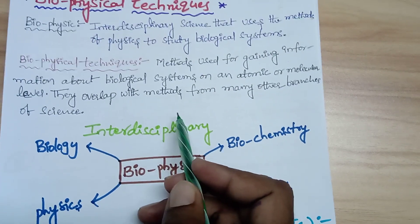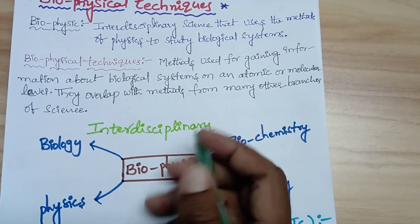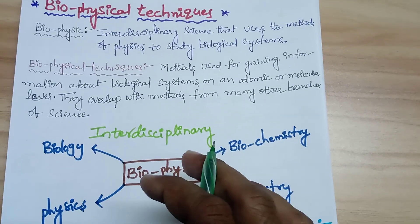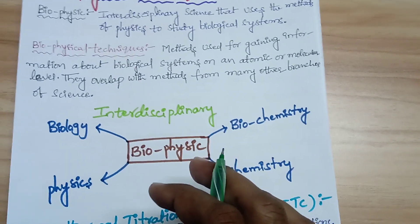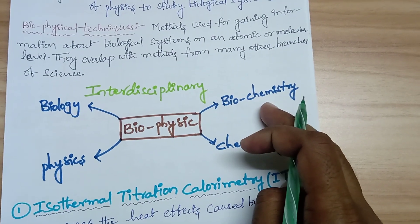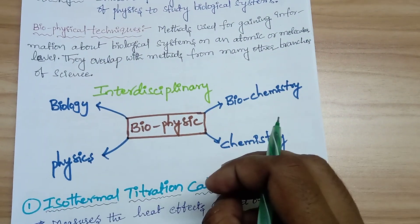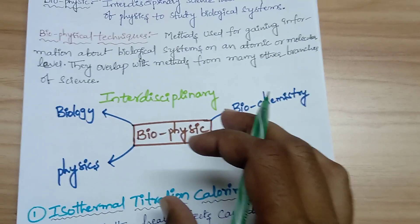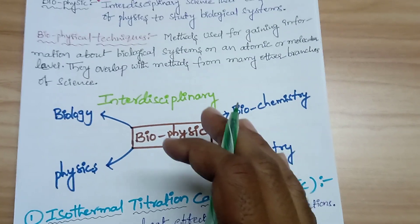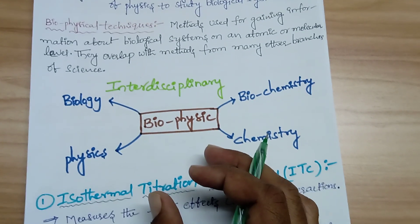Biophysical techniques overlap with methods from many other branches of science, so biophysics is not a single subject — it is an interdisciplinary subject. It is a combination of biology, physics, biochemistry, and chemistry. These combined subjects form biophysics.